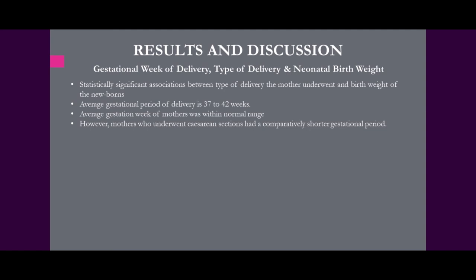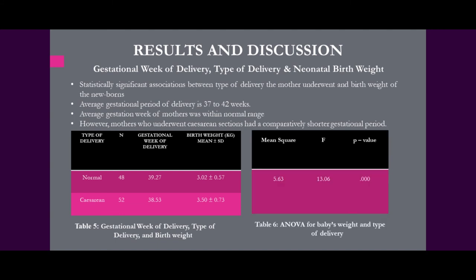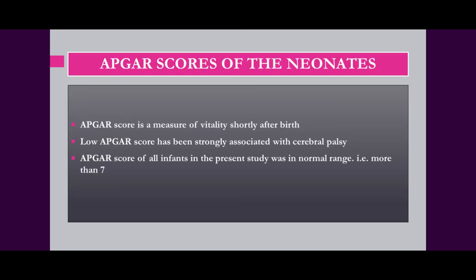Regarding gestational week of delivery, type of delivery, and neonatal birth weight: statistically significant associations were found between the type of delivery and the birth weight of the newborn. Women with normal blood glucose levels and a normal gestational weight gain pattern had longer gestational periods, as opposed to women with higher blood glucose levels who had shorter gestational periods — this association was also statistically significant. A negative correlation existed between birth weight of the newborn and gestational week of delivery, meaning a shorter gestational period was observed when birth weights were higher. Macrosomic infants necessitated an early delivery and a caesarean section.